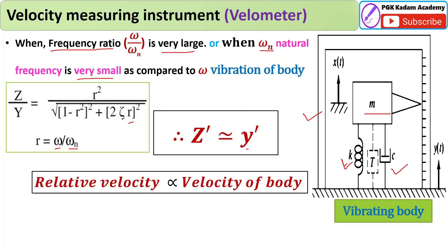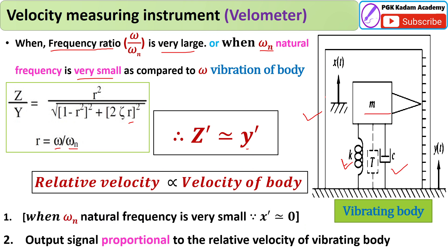For this purpose, two instruments are available. Before learning them, consider the conditions for using this velocity measuring instrument. First, the natural frequency of the instrument must be very small. When it approaches zero, z-dot becomes directly proportional to y-dot, and the output signal is proportional to the velocity of the operating body.